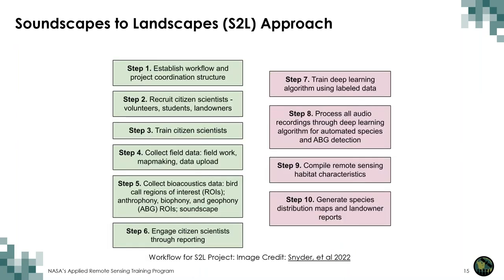In this paper, the team outlines specific steps for the project. In green are the primary aspects focused around citizen science, which include establishing workflow and project coordination structure, recruiting, training, collecting field data, doing fieldwork, map making, and data uploads, as well as collecting bioacoustic data in regions of interest and engaging citizen scientists throughout the reporting. The team also conducted more technical aspects of the project, shown in red, which consist of deep learning, data processing, compiling remote sensing habitat characteristics, and generating species distribution maps.